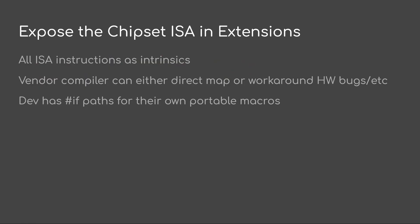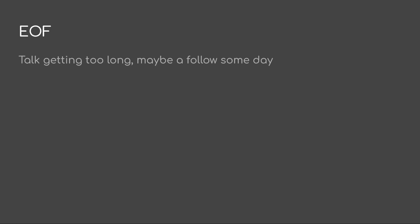Getting close to the last suggestion: it would be great to just expose the chipset ISAs in extensions. You'd query which chipset you're on, set up that extension, put in some defines, and then each software vendor building a game can make their own portability macros. That way we can avoid all the confusion in the compiler — the compiler just knows exactly what you want, and is also free to do workarounds for hardware bugs. That's it — the talk's getting too long. I'll probably follow up someday when I'm not in a rush.